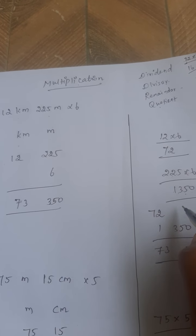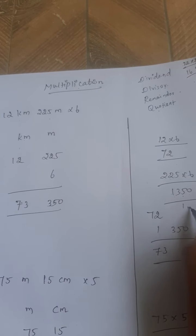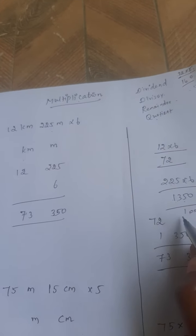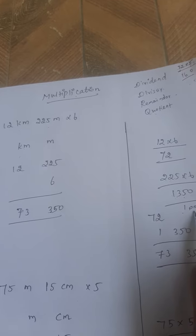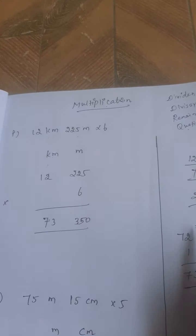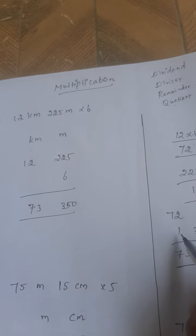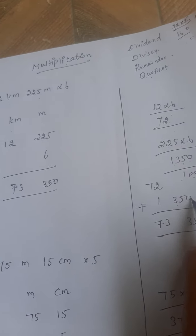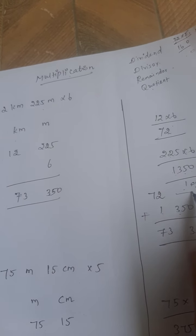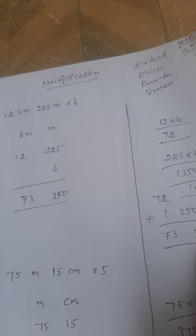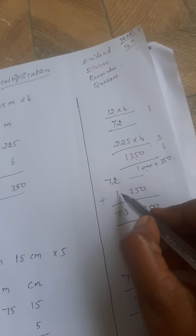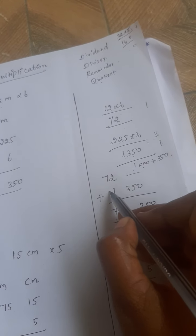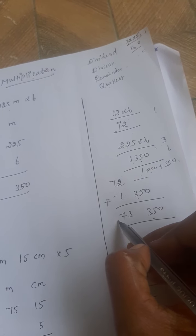How do we write the 1350? 1000 plus 350. 1 kilometer equal to what is the 1000 meter, so I can add the value 72 plus 1350. So here no value, so we can add same value. 350. 2 plus 1 what is the 3 and 7? 7 only. Here no value, so we write the 7 only.